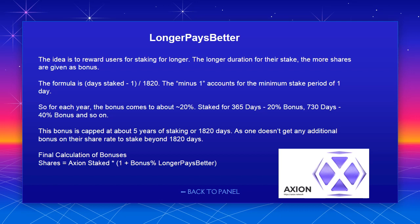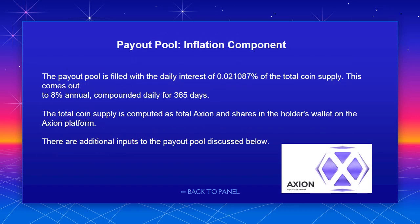Final calculation of bonuses: shares equals Axion staked multiplied by (1 plus bonus percent from longer pays better). Payout pool — inflation component: the payout pool is filled with the daily interest of 0.021087% of the total coin supply. This comes out to 8% annual, compounded daily for 365 days. The total coin supply is computed as total Axion and shares in holders' wallets on the Axion platform. There are additional inputs to the payout pool discussed below.